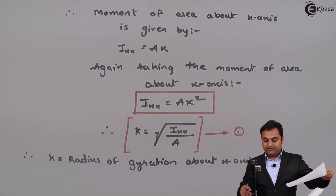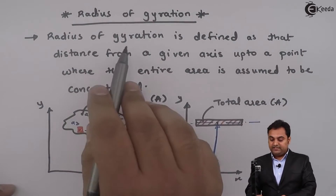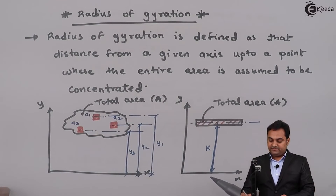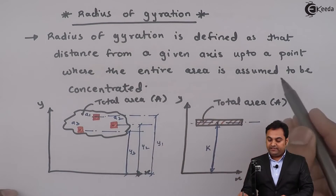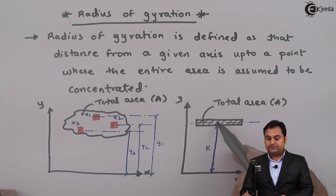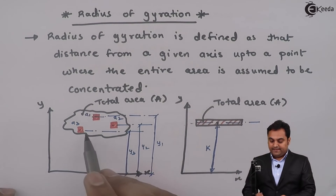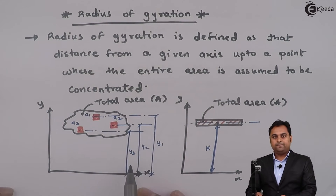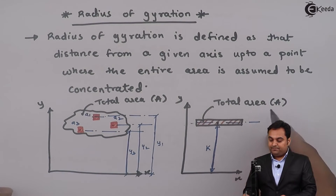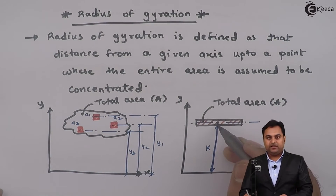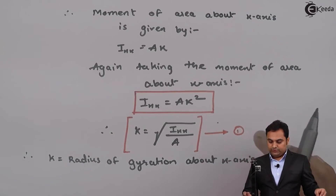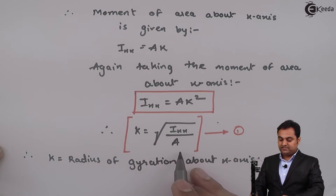As written in the definition, radius of gyration is that distance from a given axis — here the x-axis — up to a point where the entire area is assumed to be concentrated. The entire area is concentrated at this point at a distance of k. So k is called the radius of gyration, given by the formula k = √(Ixx / A).